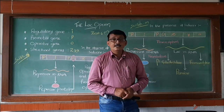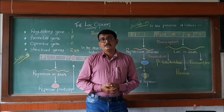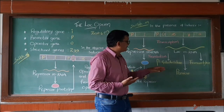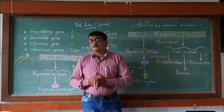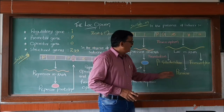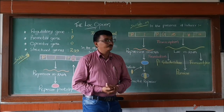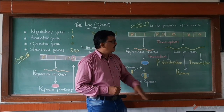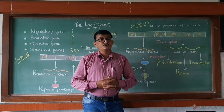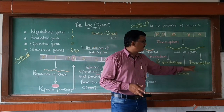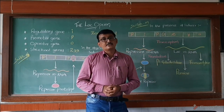Beta-galactosidase helps in the hydrolysis of lactose. Lactose is a disaccharide, and when it undergoes hydrolysis in the presence of beta-galactosidase, it gives glucose and galactose, which are monomers. Permease helps to increase the permeability of the cell wall to beta-galactosidase. Transacetylase simply transfers an acetyl group from one molecule to another. These three enzymes together help in the metabolism of lactose in prokaryotes like bacteria.